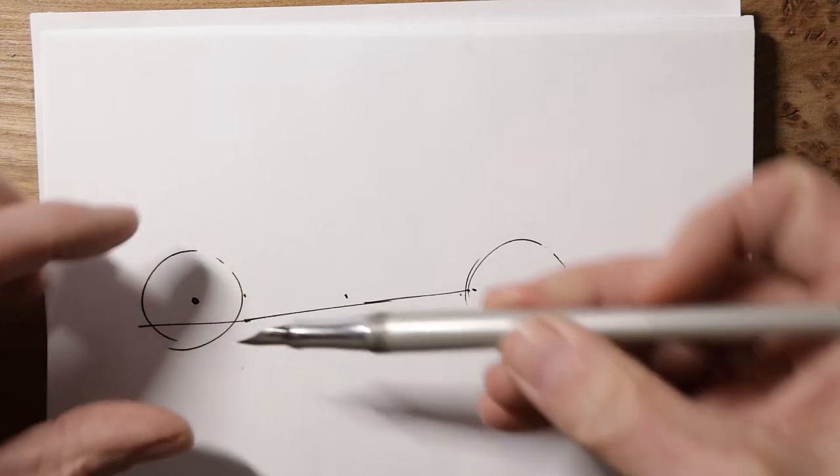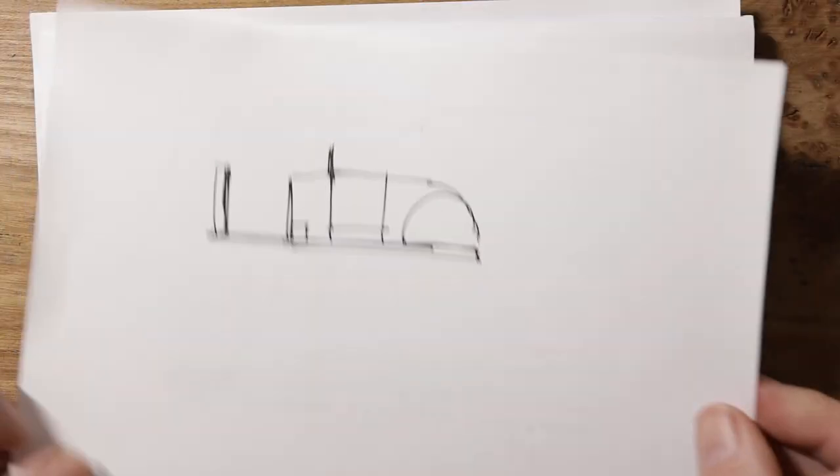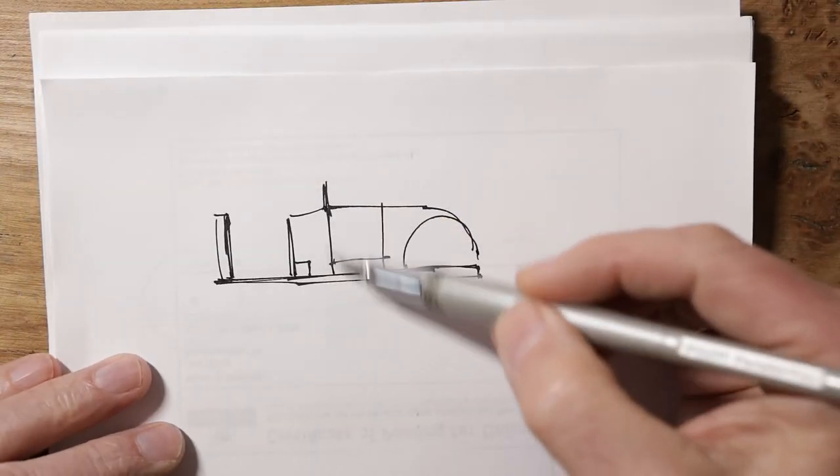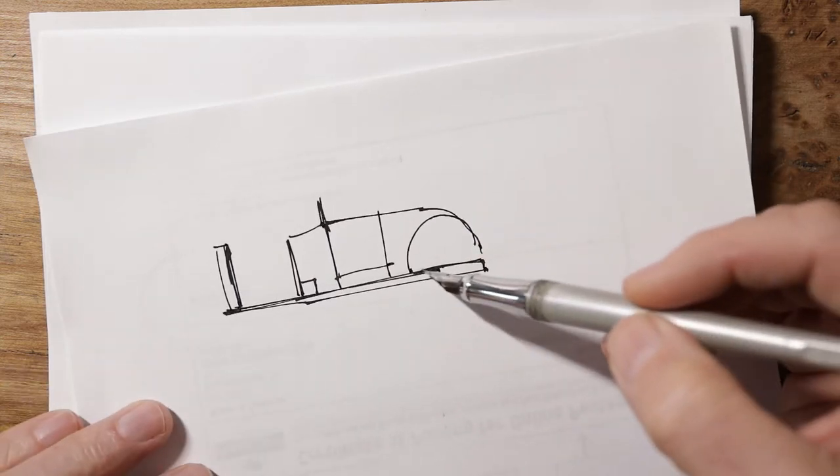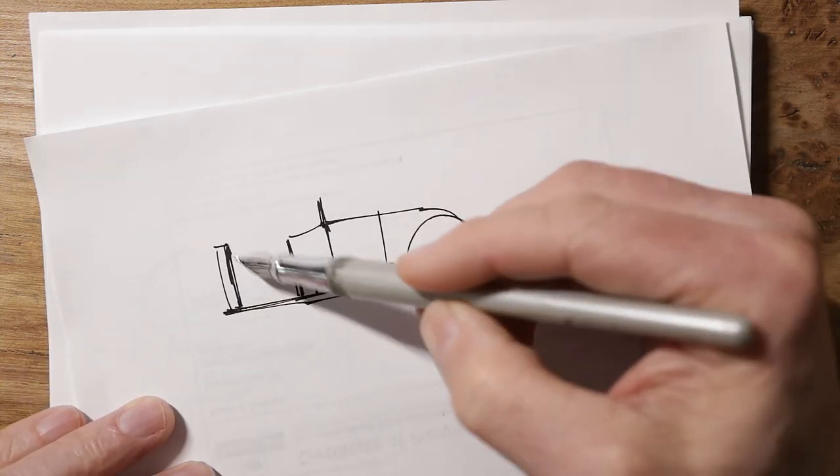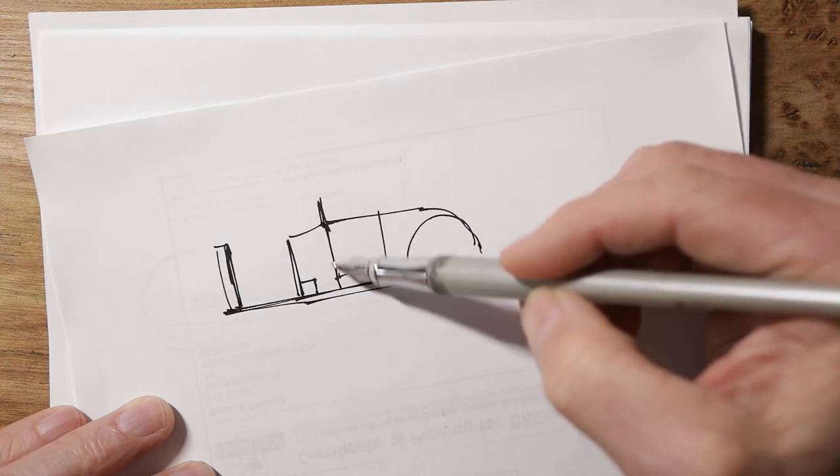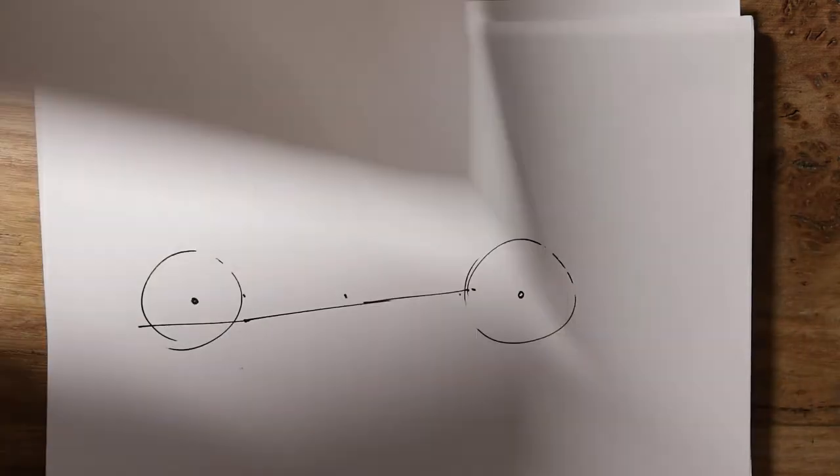And now because this is the tilt of our car, everything that would normally be a vertical line is now going to be slightly angled. So remember when you do your radiator and these lines, to do them all with a slight tilt on here.